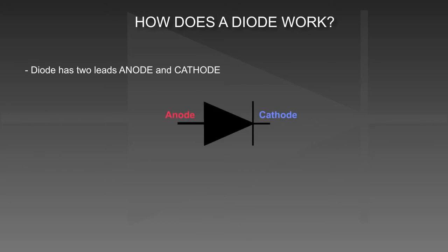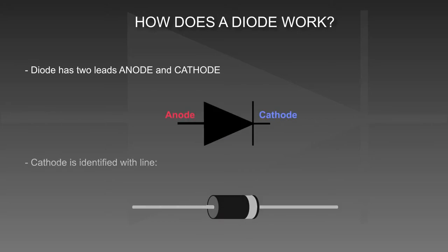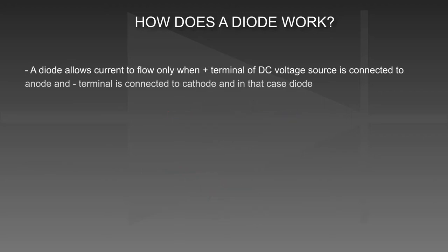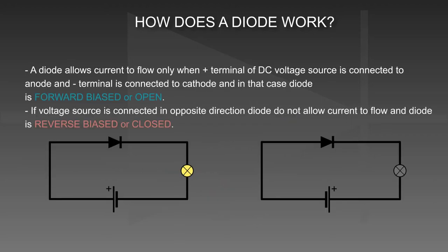A diode has two leads: anode and cathode. The cathode is identified with a white line. A diode allows current to flow only when the plus terminal of a DC voltage source is connected to the anode and the minus terminal is connected to the cathode — in that case the diode is forward biased or open. If the voltage source is connected in the opposite direction, the diode does not allow current to flow and the diode is reverse biased or closed.